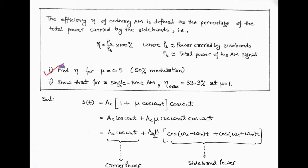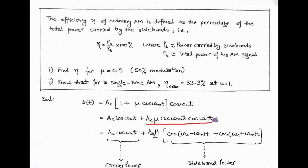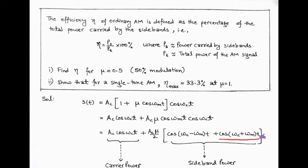Now we solve the first part. According to the question, we have ordinary AM, that is standard AM, and its equation is s(t) equals ac within bracket (1 plus mu cos omega_m t) into cos omega_c t. Now we open the bracket, so we have two terms: ac cos omega_c t, plus ac mu cos omega_m t into cos omega_c t. In the second term, we have two cosines, so we can use the 2 cos A cos B identity. We first multiply and divide by two and get ac cos omega_c t plus (ac mu / 2) within bracket [cos(omega_c minus omega_m)t plus cos(omega_c plus omega_m)t].